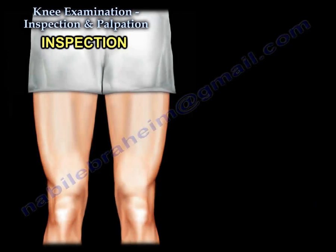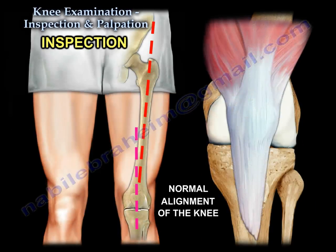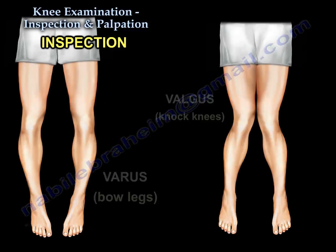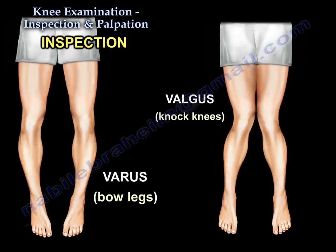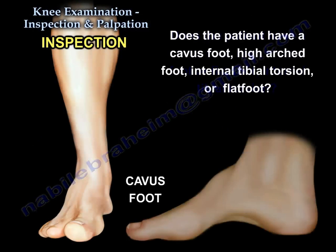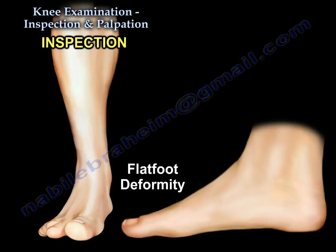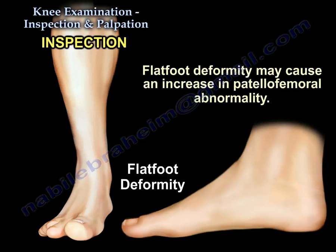We ask the patient to stand and check alignment — do they have varus bow legs or valgus knock knees? We also check for cavus foot, high arched feet, internal tibial torsion, or flat feet, all of which can increase patellofemoral abnormality.